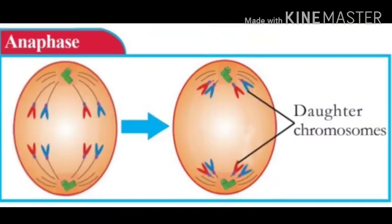The third phase is known as anaphase. Each chromosome splits simultaneously at the region of the centromere to form two daughter chromatids. Chromatids begin to move towards opposite poles — this is the major change that takes place during anaphase.